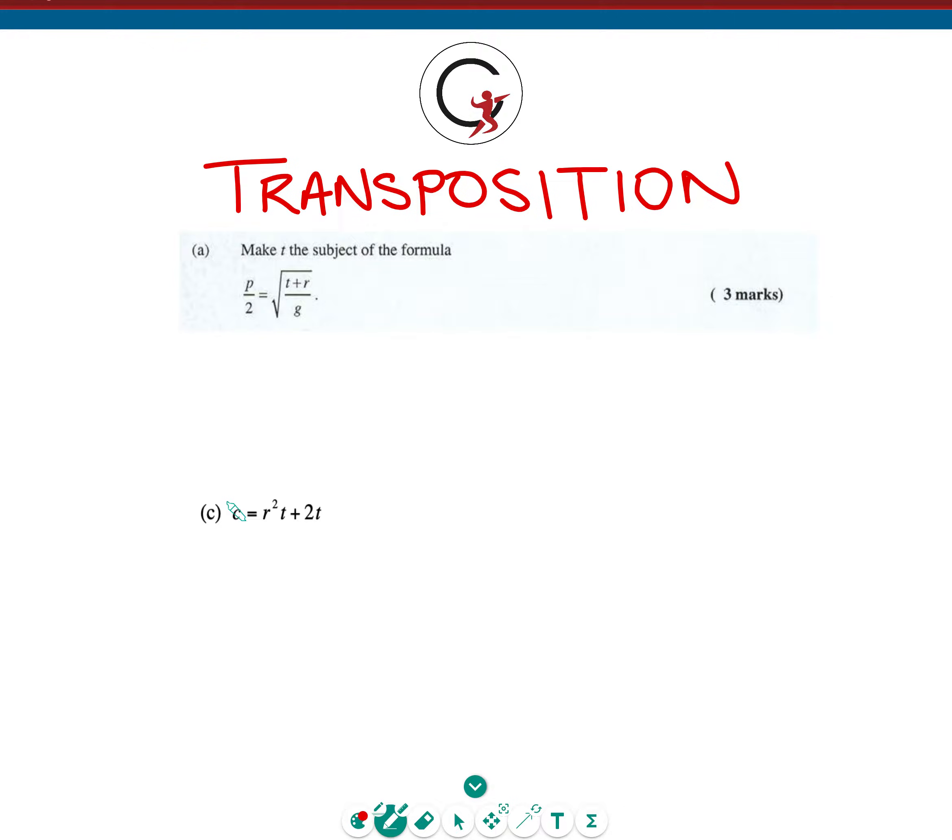We're going to do two examples to walk you through how exactly we're going to answer this question: Make T the subject of the formula. Transposition simply means we are moving things around in an equation to make something else, in this case the variable T, the subject of the formula. What that means is we want to end up with T is equal to something. The subject means T must stand by itself on one side and have all the other variables on the other side of the equation.